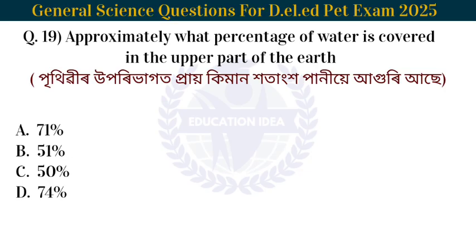Next question: Approximately what percentage of the upper part of the Earth is covered with water? The answer is approximately 71 percent of the Earth's surface is covered with water.